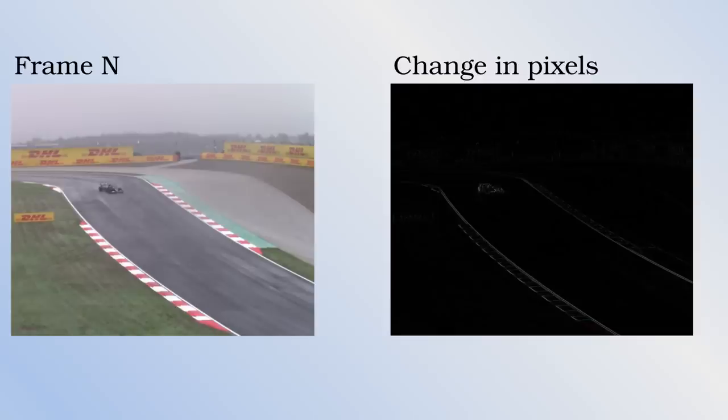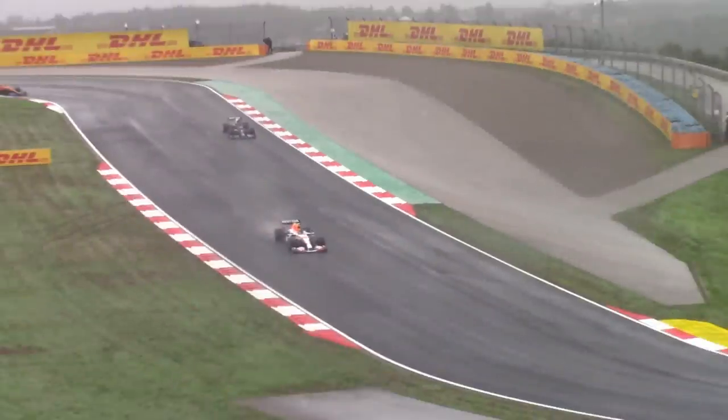Typically there will be a keyframe, which is stored in its entirety, and then up to 30 seconds of these little changes. When you see garbled footage, this is usually due to the data encoding those changes being corrupted. Eventually, when the next keyframe is reached, the video looks good again.